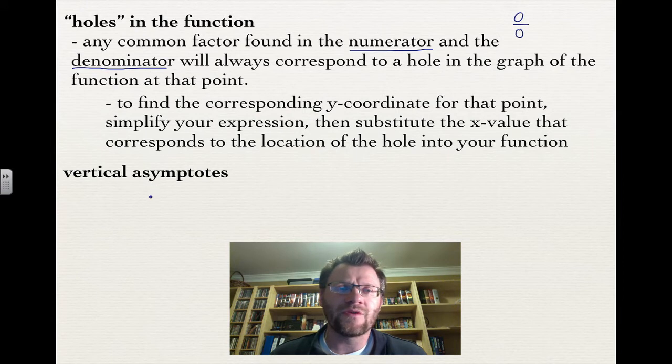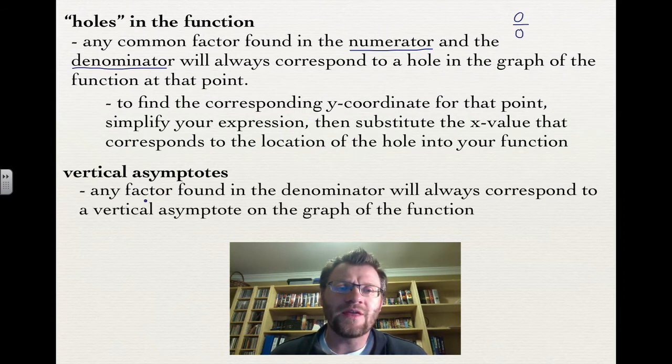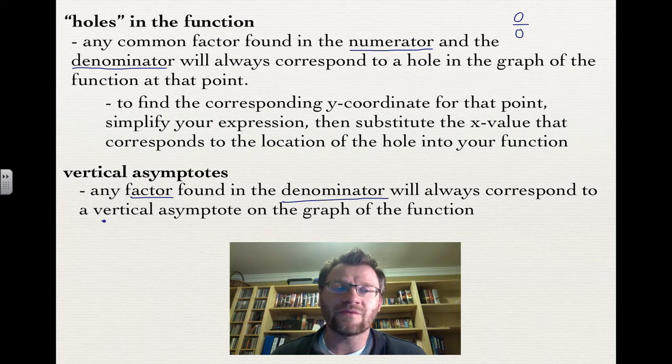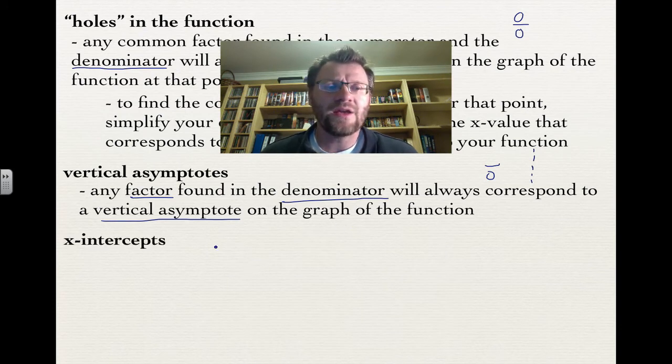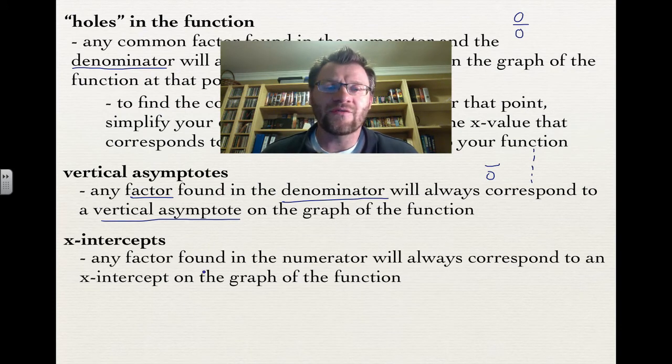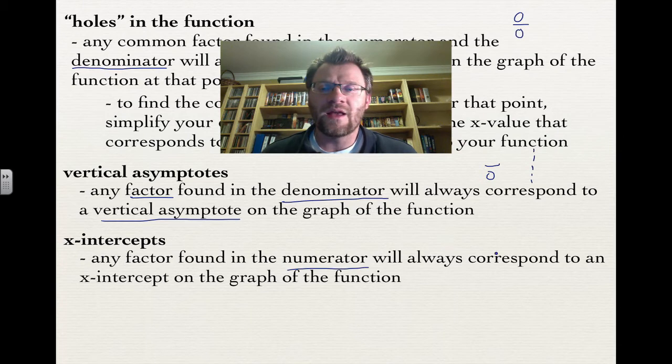A vertical asymptote we've taken before, and we know any factor that's just found in the denominator will always correspond to a vertical asymptote. That's the undefined case, dividing by 0. That's an imaginary vertical line that the graph will not cross. And x-intercepts are any factor found only in the numerator, corresponding to the zeros on the graph.